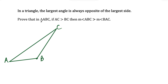And to do that, I'm going to prove that in this triangle here, ABC, that if side AC is greater than side BC, then the measure of angle ABC, which is the angle opposite of AC, is going to be greater than the measure of angle BAC.